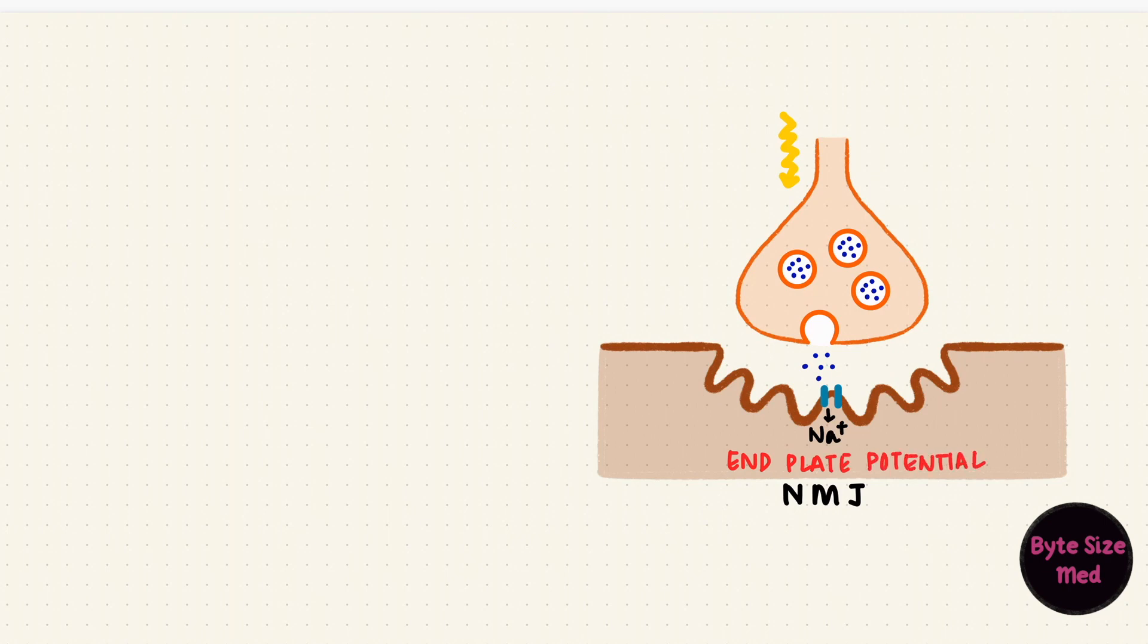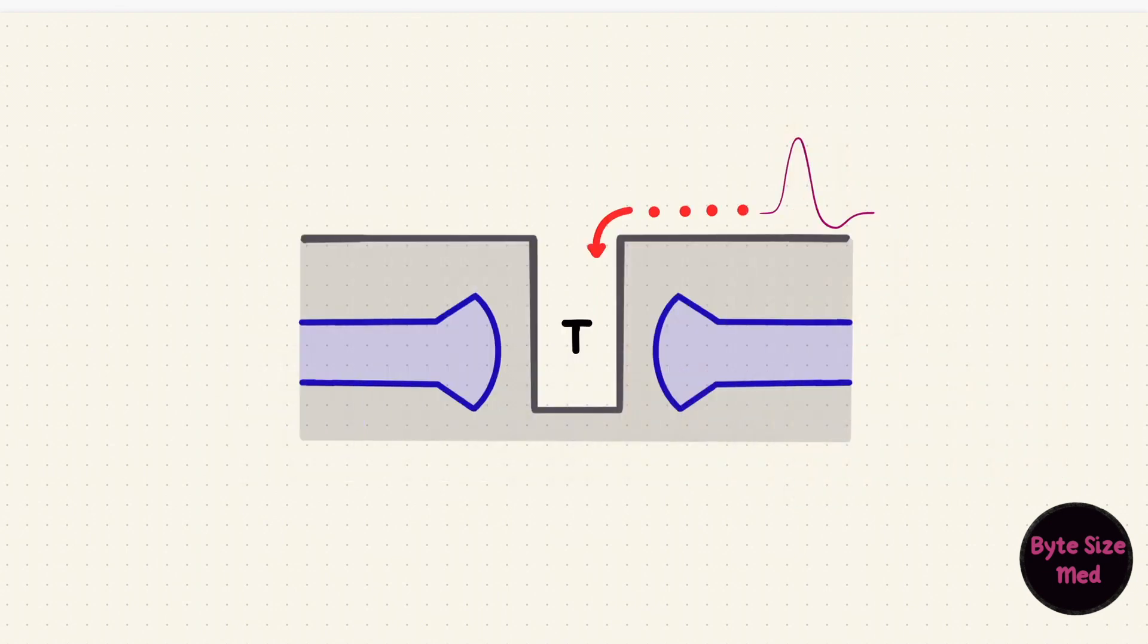When that potential reaches threshold, there's an action potential. The action potential propagates along the membrane and down the T-tubules, which are dips from the membrane. That stimulates a dihydropyridine receptor, which is a voltage-gated calcium channel.